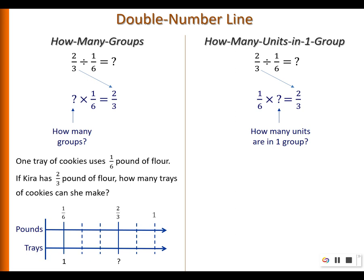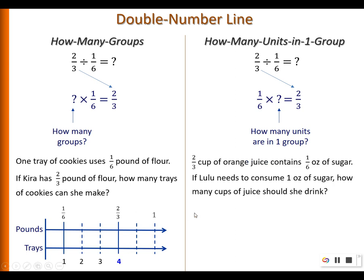The question is asking how many trays she can make if she has 2/3 pound of flour. You can just count: one, two, three, four — so she can make four trays.